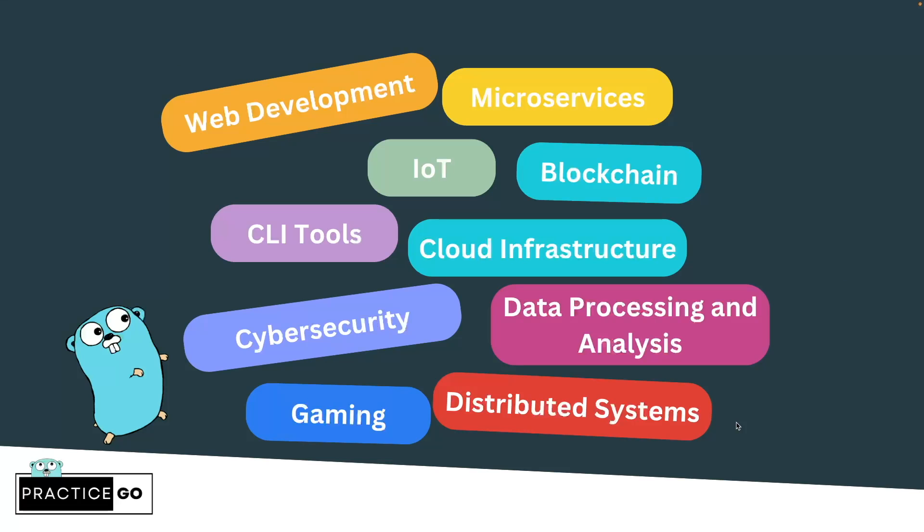With respect to use cases, you can use Golang in web development, microservices, IoT, blockchain, and CLI tools. Golang is very popular for building CLI tools — for example, Kubernetes, Hugo, and GitHub CLI are all created in Golang. Then we have cloud infrastructure and cybersecurity, where it is gaining more and more traction and many cybersecurity firms are adopting Golang. Then we have data processing, analysis, gaming industries, and distributed systems.